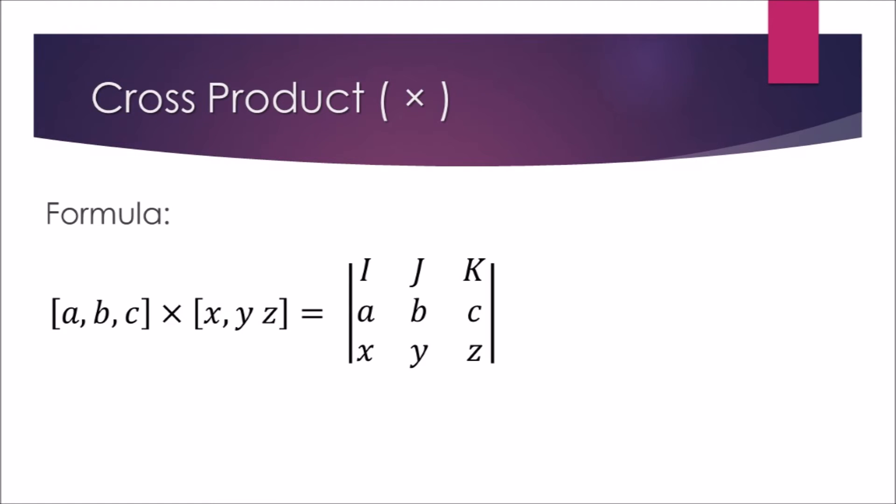For the cross product, you may want to think of the result as taking the determinant of a vector with the first row labeled i, j, and k, the second a, b, and c, and the third x, y, and z. This form is often used as a memorization device.